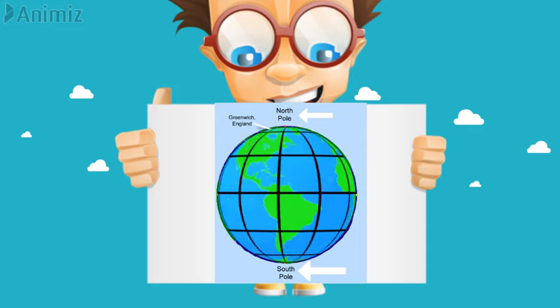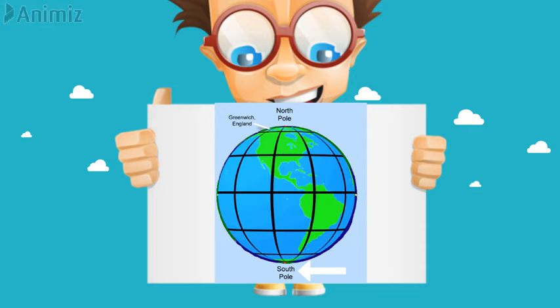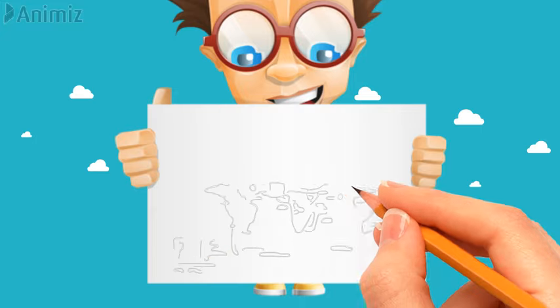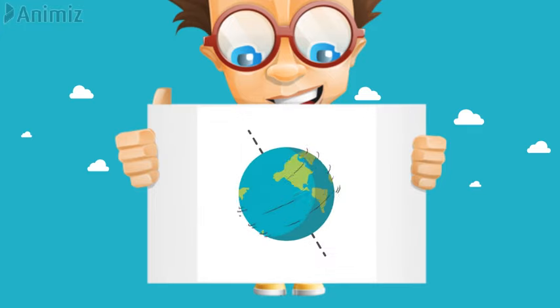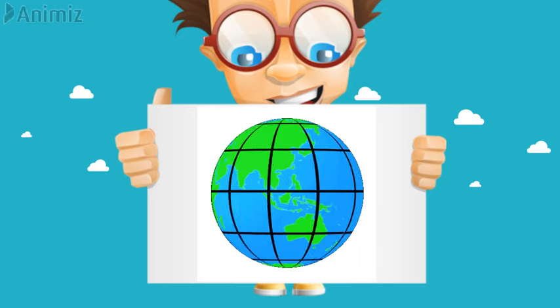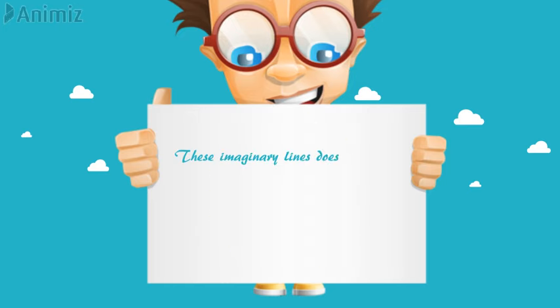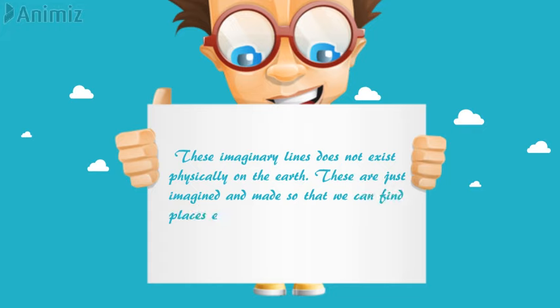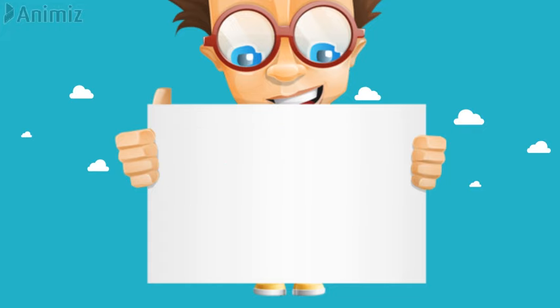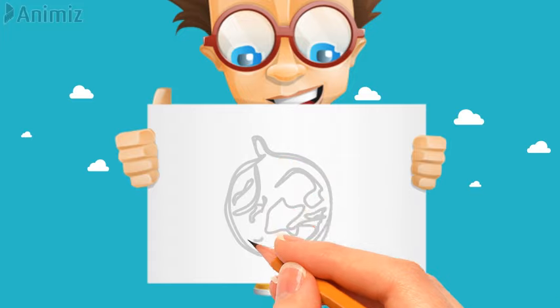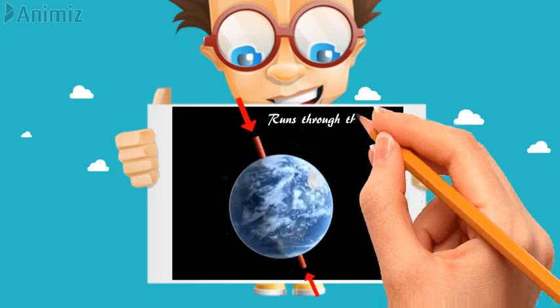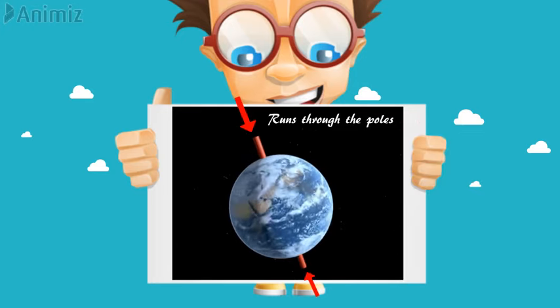Now we will discuss about the imaginary lines of the earth. We all know that our earth is so big that it is impossible for us to see all the places of the entire earth on a flat piece of paper. So the geographers made a globe and drawn some imaginary lines on it. These imaginary lines do not exist physically on the earth — they are just imagined and made so that we can find places easily. It is believed that the earth rotates or moves around its own axis. Axis is an imaginary straight line that runs through the poles, and around this straight line the earth keeps on moving.